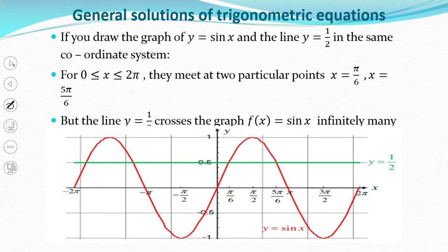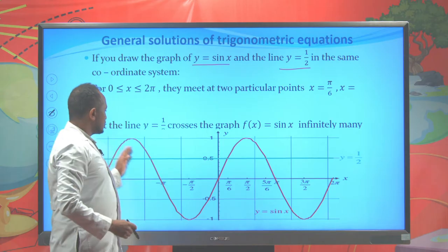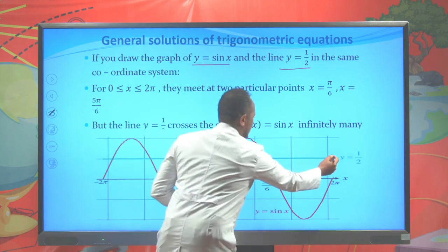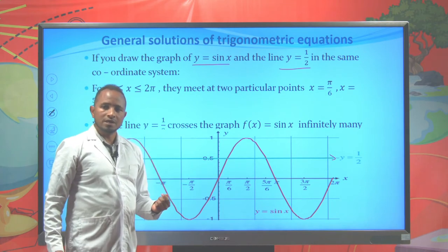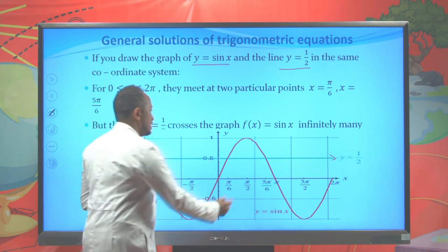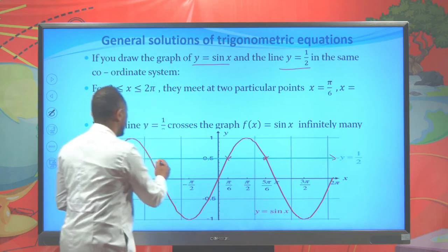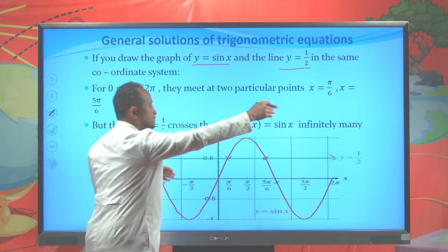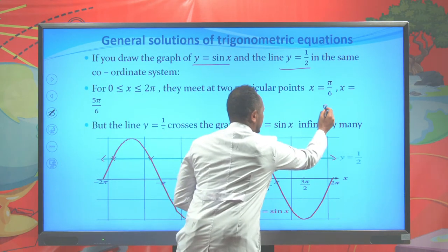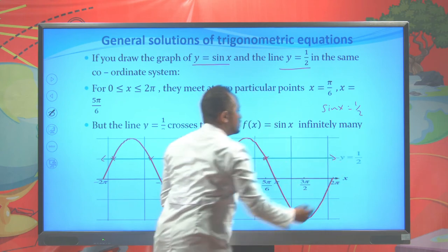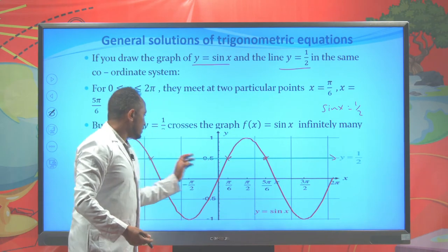The next part is the general solution of trigonometric equations. If you draw the graph of y = sin(x) and the line y = 1/2 on the same coordinate system, the graph of sin(x) and y = 1/2 cross at infinitely many points. Since the sine function is periodic, sin(x) = 1/2 has infinitely many solutions.